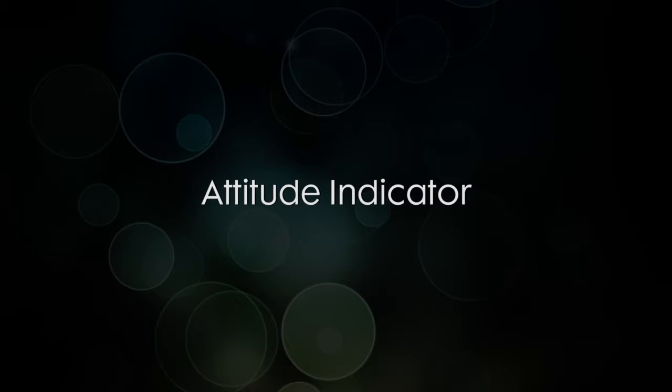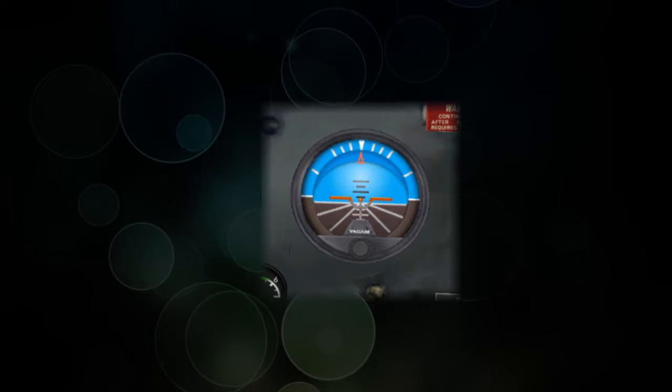So those two principles are the main principles of gyroscopes, and they're why some of the instruments that we have can actually work. Our first instrument is the attitude indicator. The attitude indicator is the artificial horizon. It will show you your bank and your pitch.